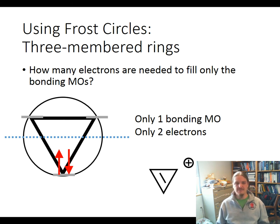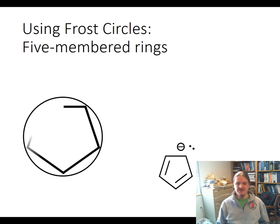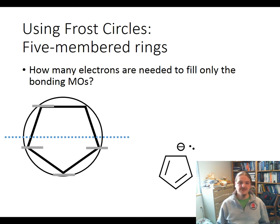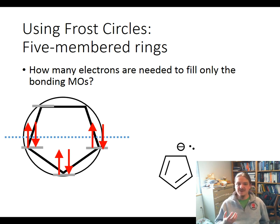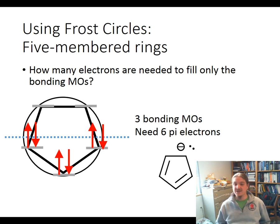An example of this is the cyclopropenyl cation. For a five-membered ring, I need six electrons to fill all three bonding molecular orbitals — so that's six pi electrons in a five-membered ring system. The cyclopentadienyl anion is one way that can be achieved. In an upcoming video, we'll see that having heteroatoms in the ring system can also make this work.